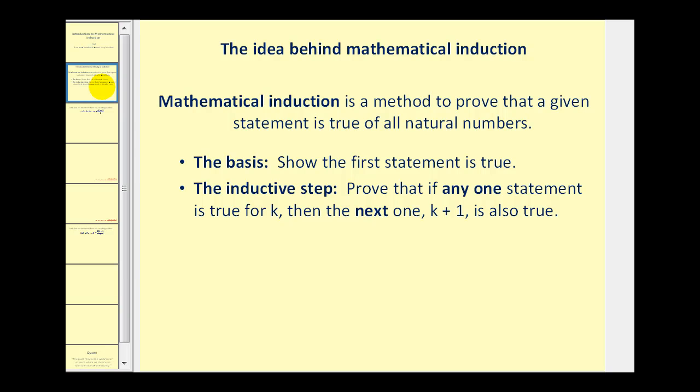The first step is the basis, where we show the first statement is true. And the second step is the induction step, where we prove that if any one statement is true for k, then the next one, k plus one, is also true.